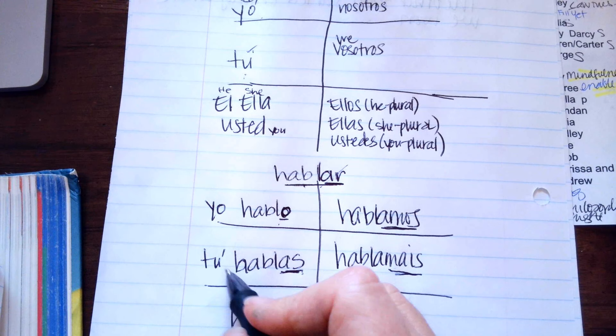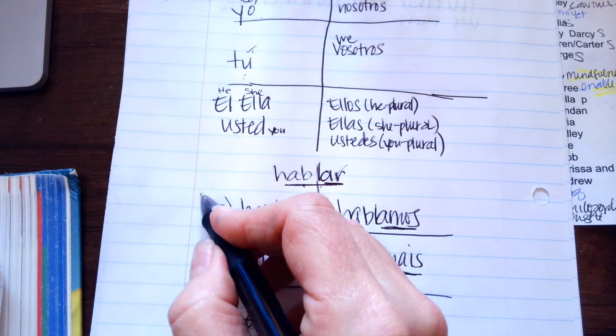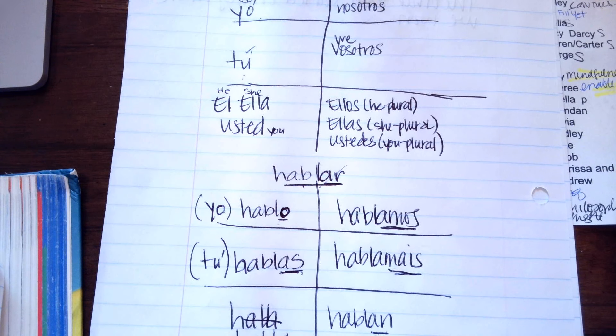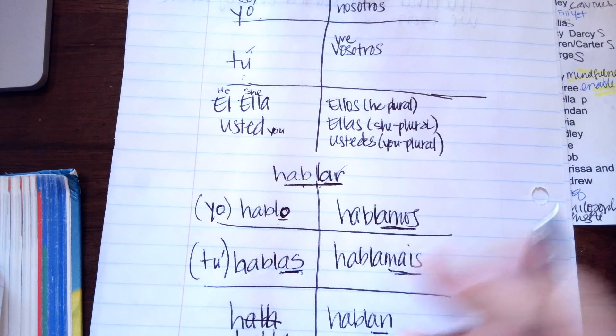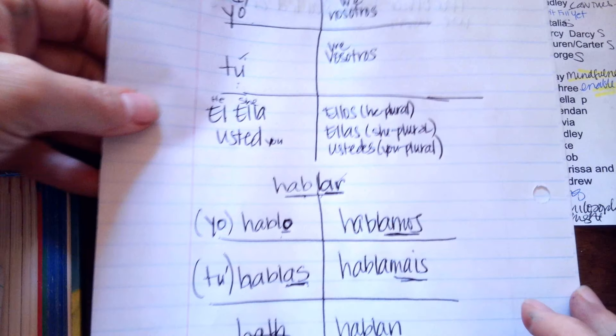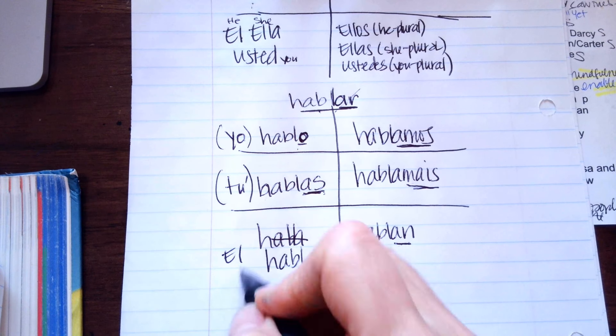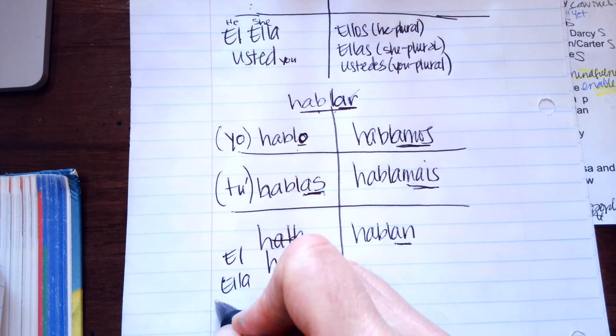But you don't say this. This is just showing you. You just say hablas. And then habla is either él, ella, or usted.